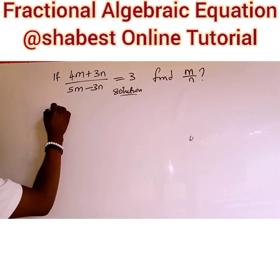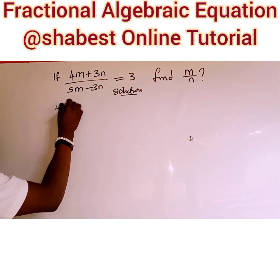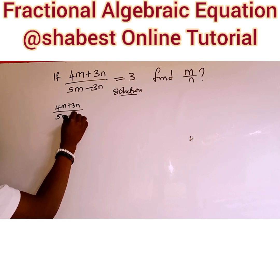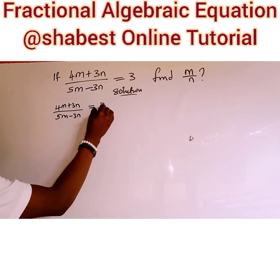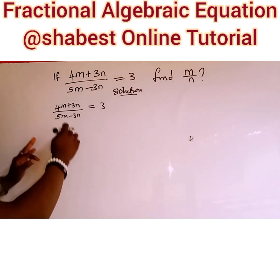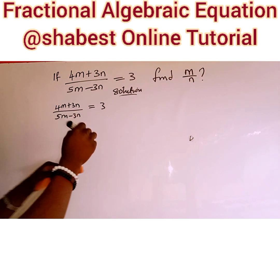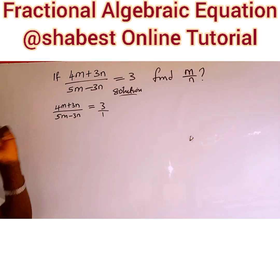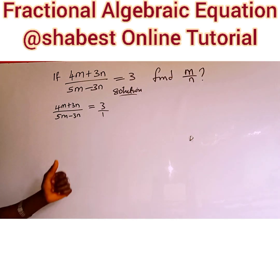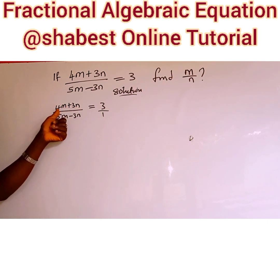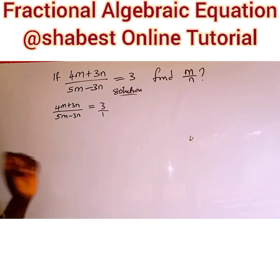The question is 4m plus 3n over 5m minus 3n, which is equal to 3, and we are asked to find the value of m over n. To make both the left hand side and the right hand side a fraction, we write 3 as 3 divided by 1 — that still gives us 3. What we are going to do next is to cross multiply: use this to multiply this, then use this to multiply this.